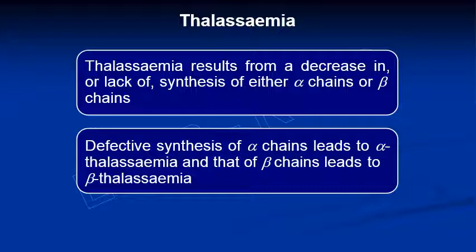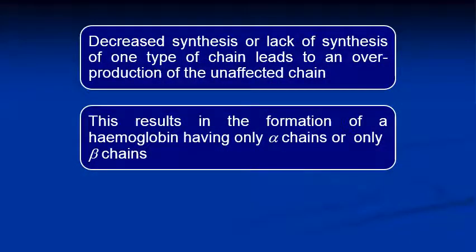Thalassemia results mainly from a lack or decrease in synthesis of either the alpha or beta chain, or from defective synthesis. If the alpha chain is defective we call it alpha thalassemia; if the beta chain is defective it is beta thalassemia. A lack of synthesis of one chain type causes overproduction of the other, resulting in hemoglobin made up predominantly of only one chain type.